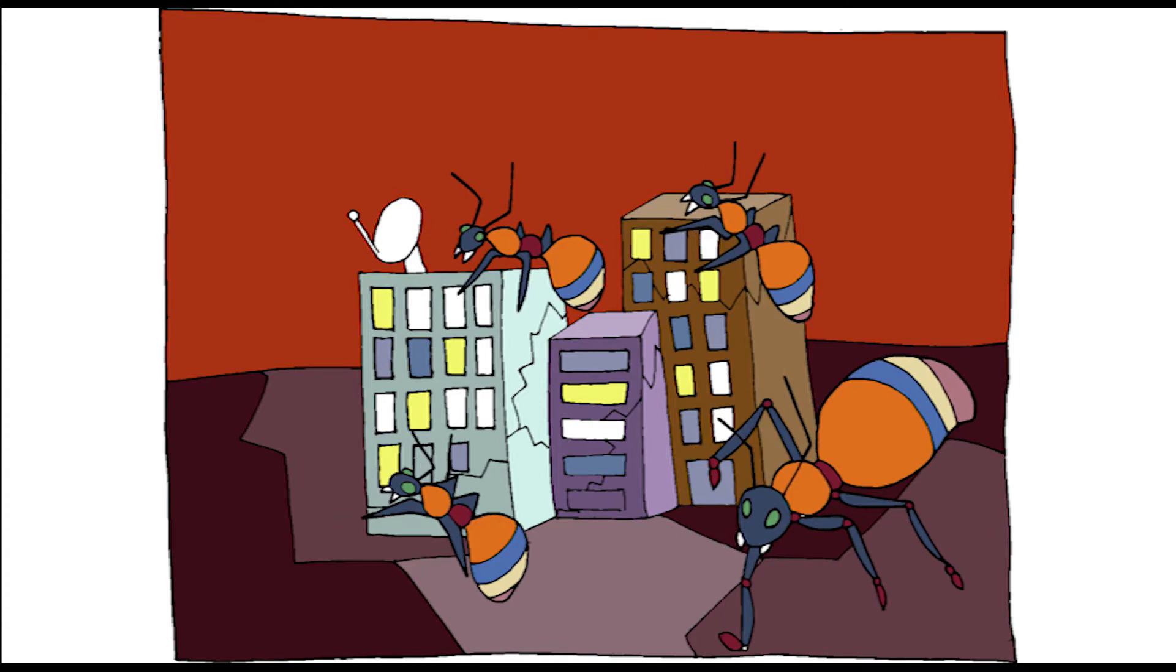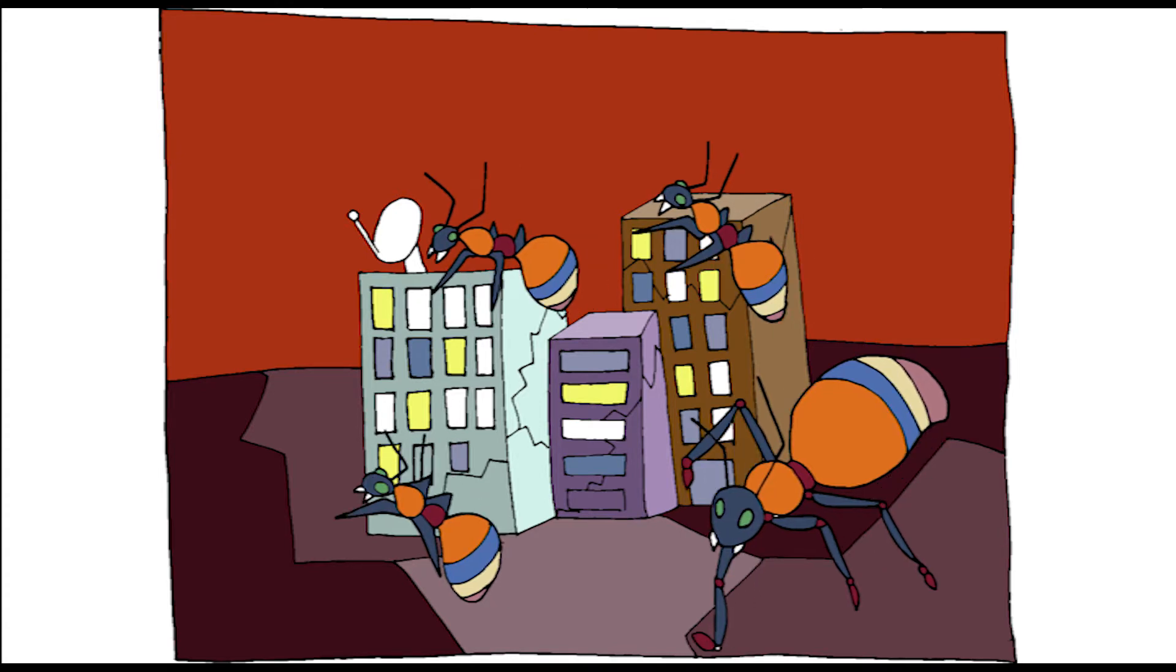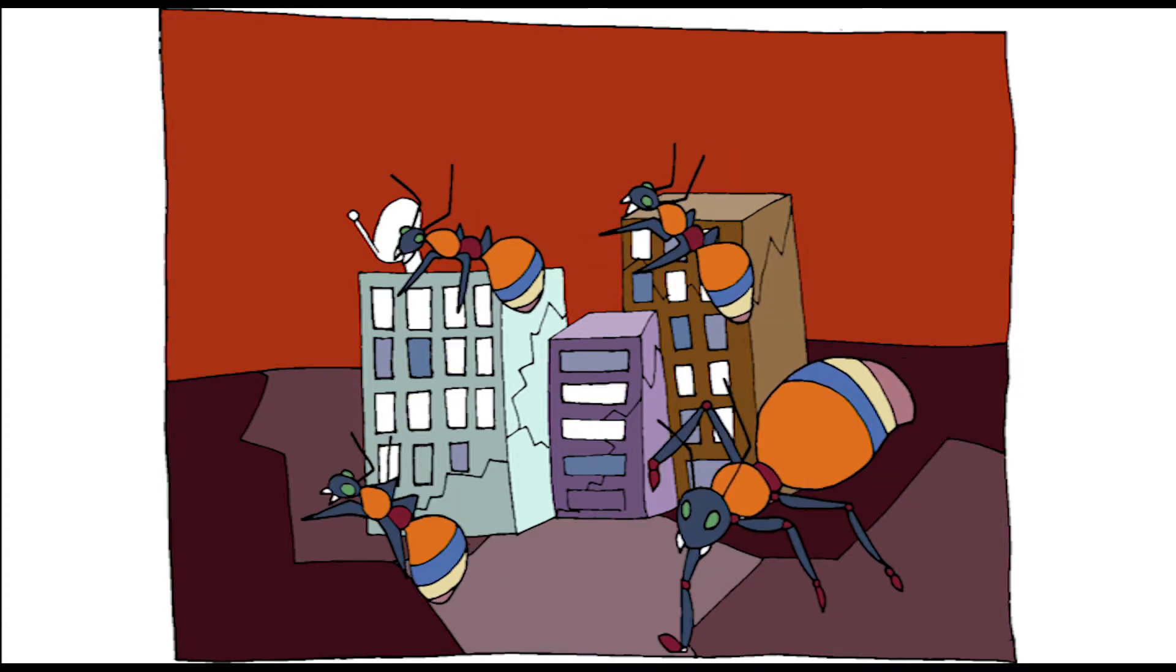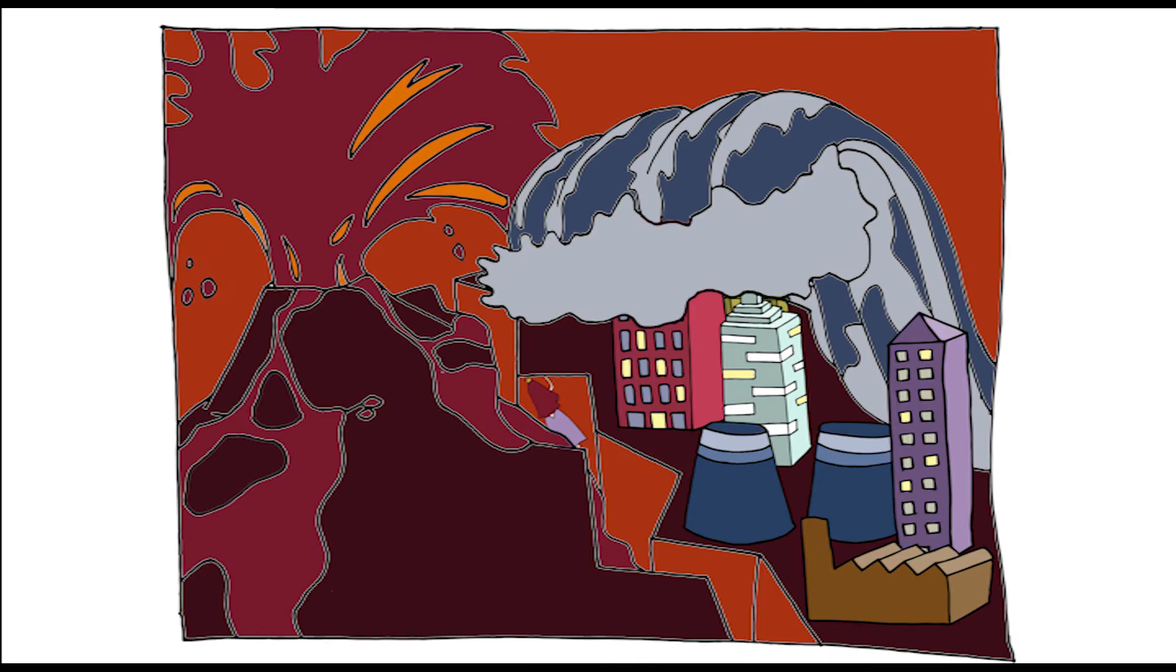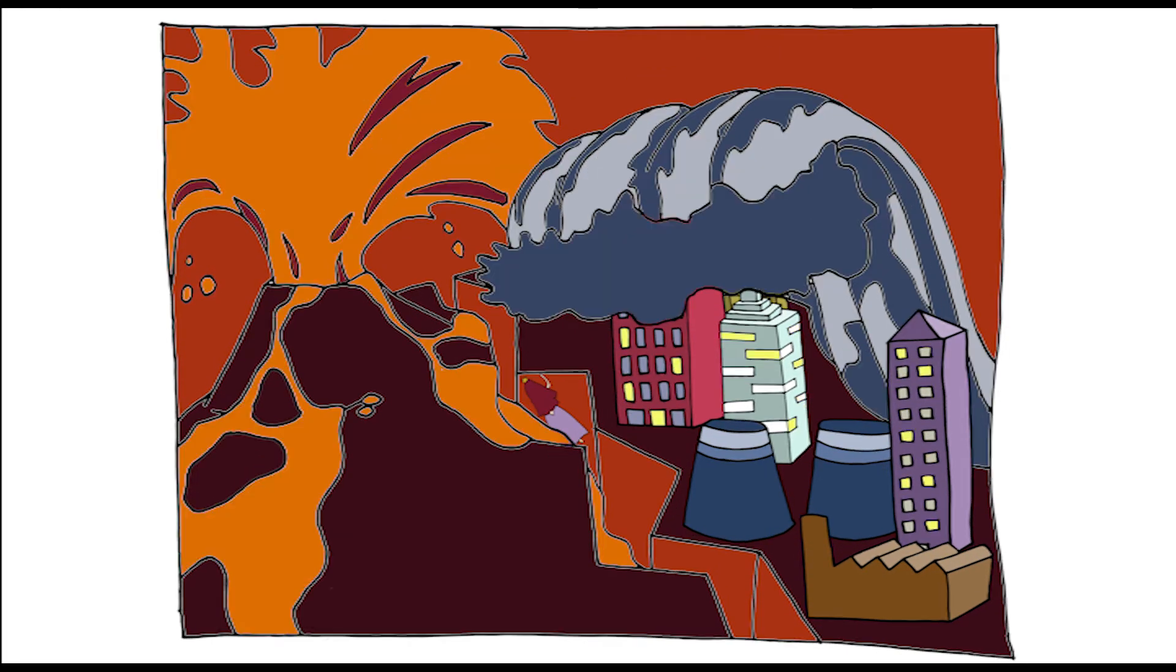There was a mess everywhere. Earthquakes destroyed cities. Tsunamis submerged coasts. The wind tore out all harvest, and the insects attacked all the buildings. Even the volcanoes awakened.